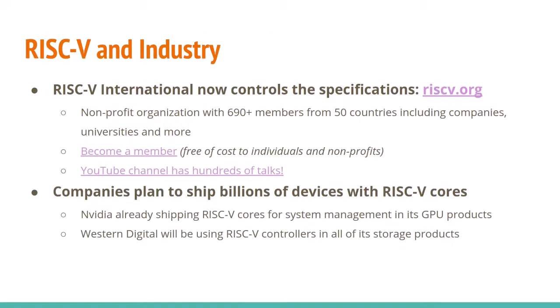RISC-V is seeing increasing adoption in industry. RISC-V International now controls the specifications at RISC-V.org, having taken over from the original Berkeley group. It's a non-profit with around 690 members from 50 different countries, including companies, universities, and non-profits. Individuals can join for free, and non-profits and universities can join for free as well. RISC-V International has a YouTube channel with hundreds of talks, and one of the ways I've learned a lot about RISC-V is by watching those.